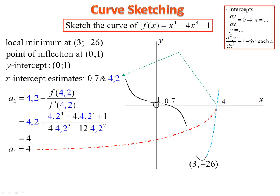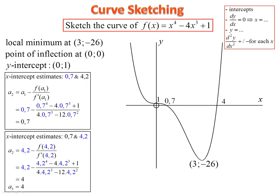We now have all the information needed to sketch the curve — through x equals 4, through the turning point. There is our curve. Pause and have a look at the working; make sure you understand how that graph came about.